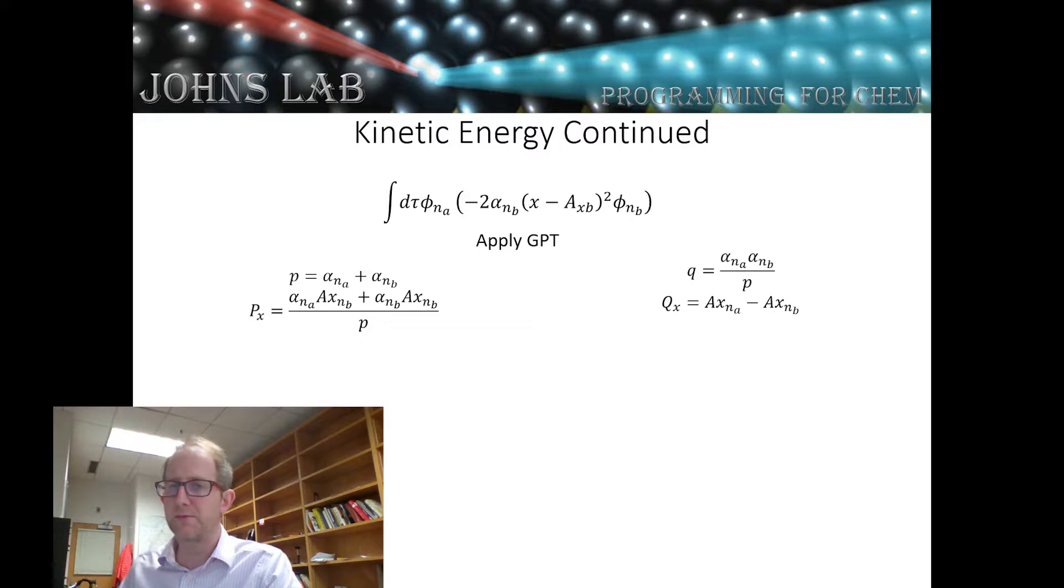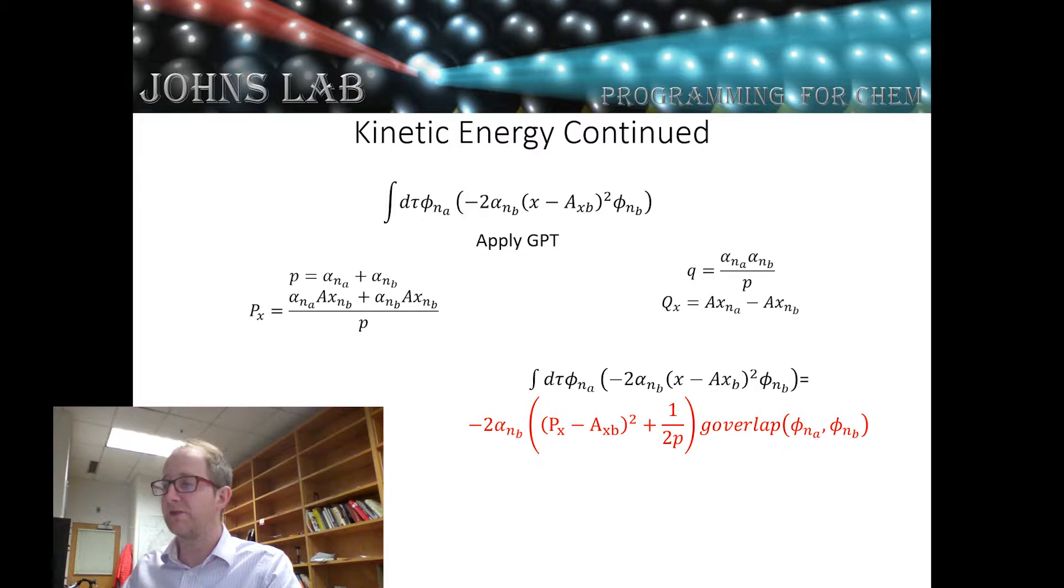With pencil and paper we can work this out pretty quickly that the resulting overlap is just going to be minus two times the exponent times this quantity, which is the distance between the new Gaussian and the starting Gaussian squared, plus one over two times the new Gaussian's exponent times the overlap of the two original functions. That's pretty straightforward, and once we've worked that out, we can implement it in our program relatively easily.